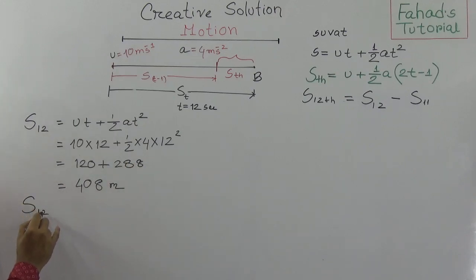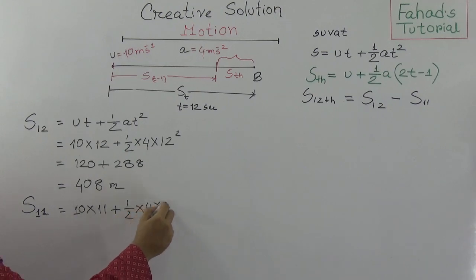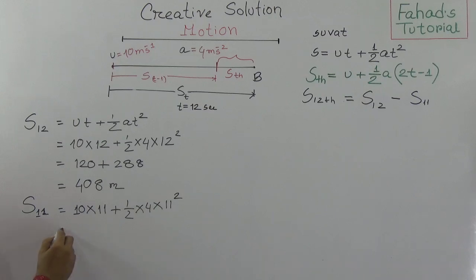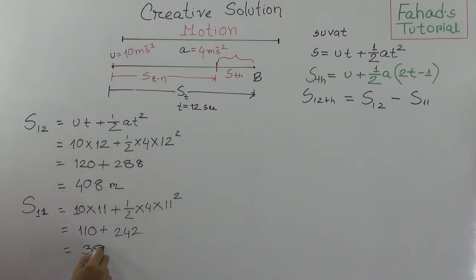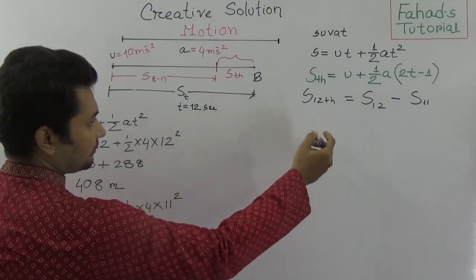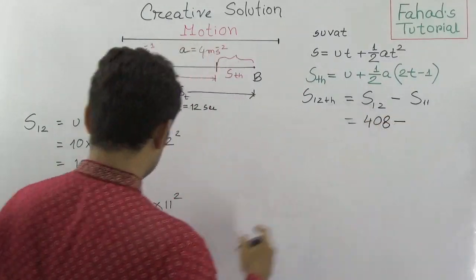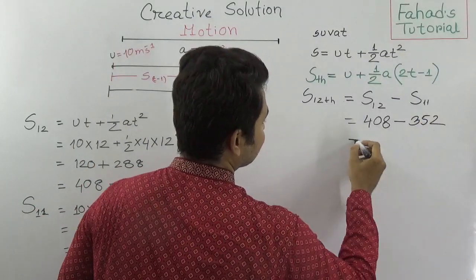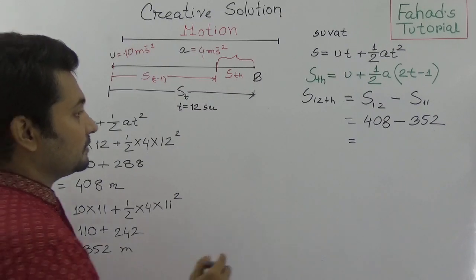For S(11): using S = UT + ½AT², with U = 10, T = 11, A = 4. That gives 10×11 + ½×4×11² = 110 + 2×121 = 110 + 242 = 352 metres. So the distance in the 12th second = 408 − 352 = 56 metres.